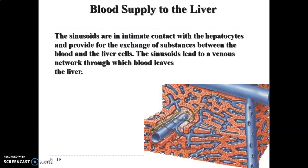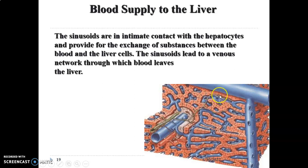So we now go to the blood supply of the liver. We have sinusoids that are very close to the hepatocytes. Remember, hepatocytes radiate from a central vein, and in between the hepatic rays you have sinusoids, which are endothelial-lined channels containing blood. Between the sinusoids and the hepatocytes we have the Space of Disse. Sinusoids are very close to the hepatocytes, and that helps to exchange material from the liver cells to the blood, and from the blood to the liver cells.